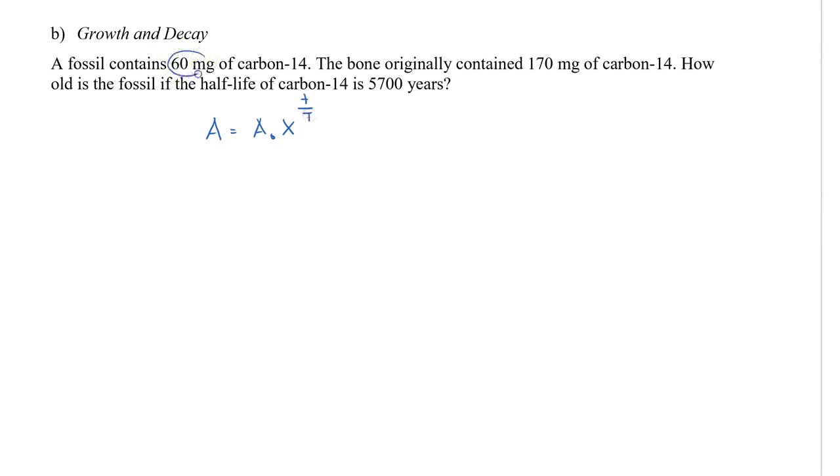This time, we're going to use the formula A equals A naught times X to the power of T over T. The 60 milligrams stands for our final amount A. The 170 stands for our initial amount A naught. Our half-life is our X, and 5,700 is our big T. So this will be 60 equals 170 times a half to the power of T over 5,700.